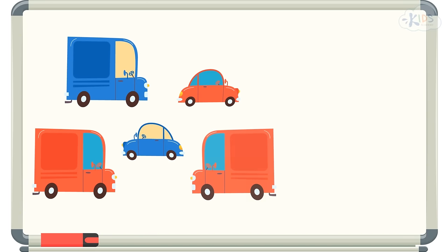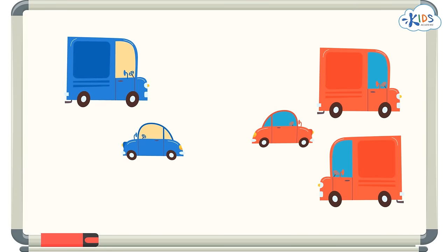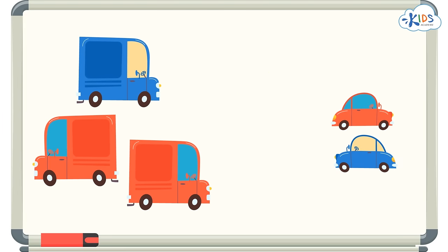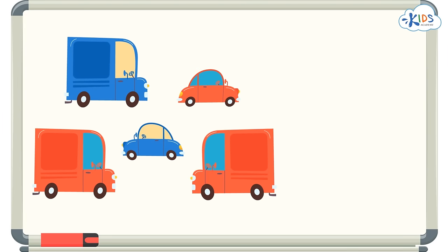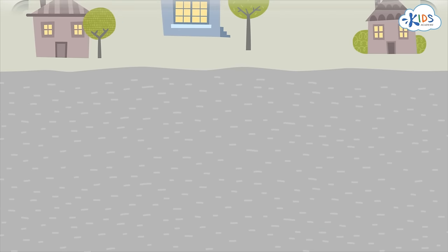Sometimes, when you look at a group of objects that you are sorting, you might think there's another way to sort these objects. That is what we're going to do today. We're going to sort the same group of objects two different ways. I think the best way to explain this is with an example. Let's check it out.